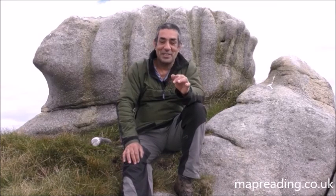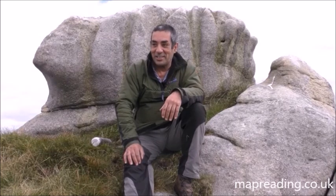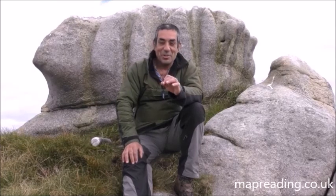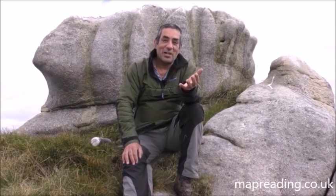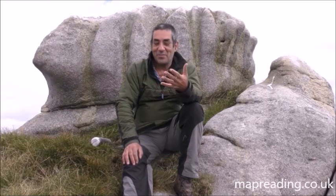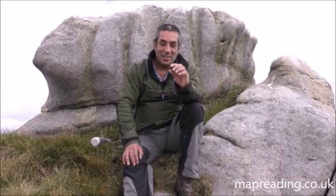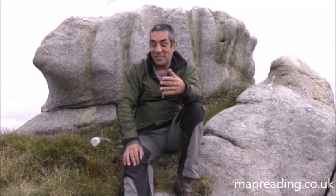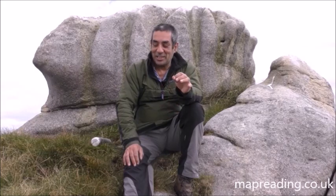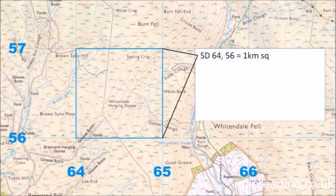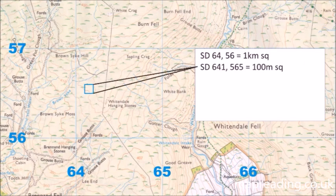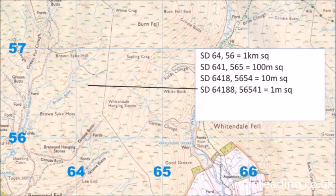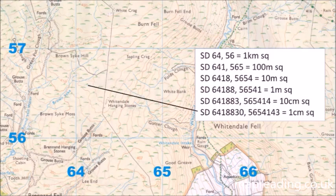Luckily the Ordnance Survey have actually worked it out and given us a very exact grid reference — and when I say exact, I mean very, very exact, something only a computer would be daft enough to produce. It's a 14-figure grid reference. A four-figure grid reference gives you a one-kilometer square, a six-figure gives you a 100-meter square, and it keeps going down until you get to a 14-figure reference, which describes a one-centimeter square. That's where we're going to try and find.